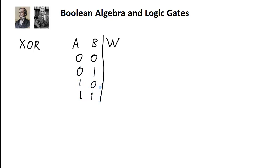The exclusive OR operation is only a 1 if one of the inputs is a 1, but not both. So it would be a 1 in this case, a 1 in this case, but not in the case where both inputs are 0 and not in the case where both inputs are 1.